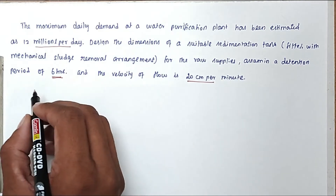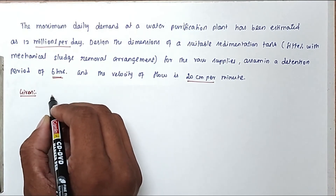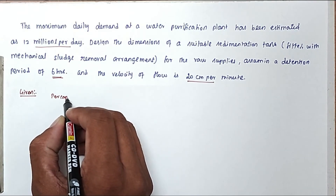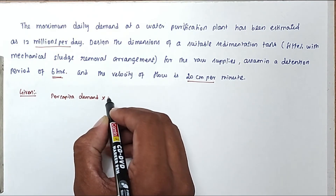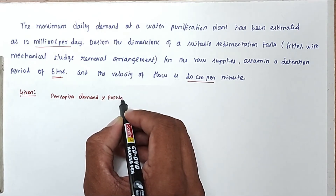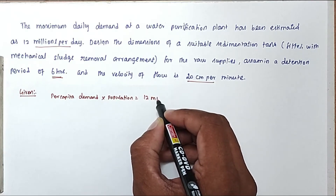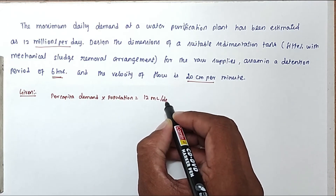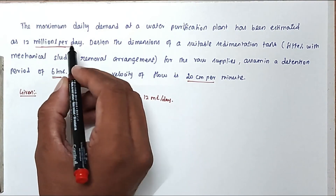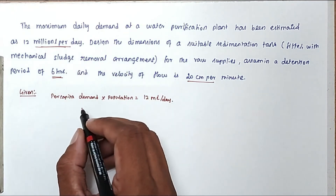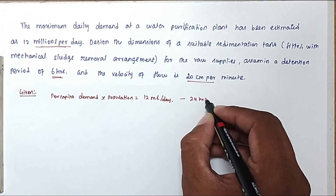The given value: per capita demand into population equals 12 million liters per day. So the daily sewage is 12 million liters per day, and it will be treated in 24 hours.